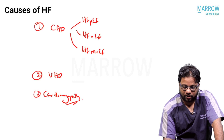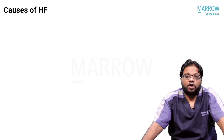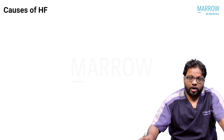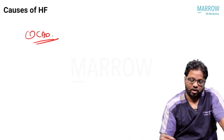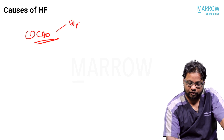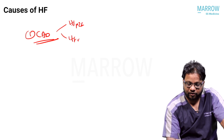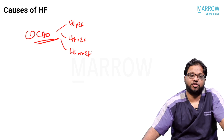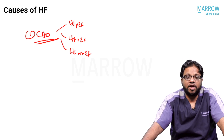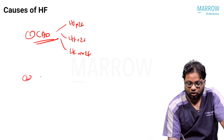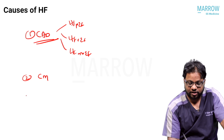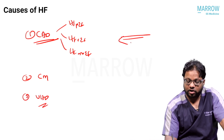To summarize for INSS exams: in India, the number one cause of heart failure across the entire spectrum — HFpEF, HFrEF, and heart failure with mildly reduced ejection fraction — is coronary artery disease. This is followed by cardiomyopathy as the second cause and valvular heart disease as the third cause. The number one cause across the entire spectrum is CAD — an important MCQ.